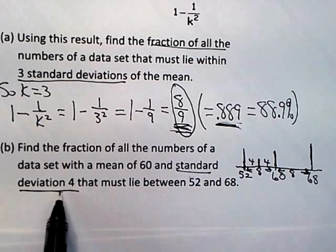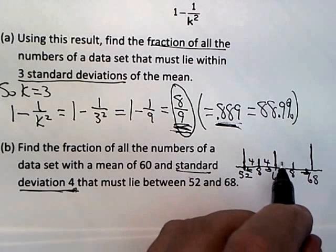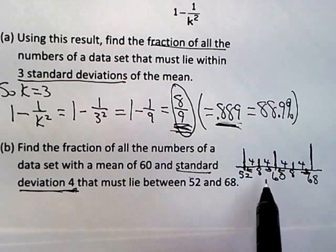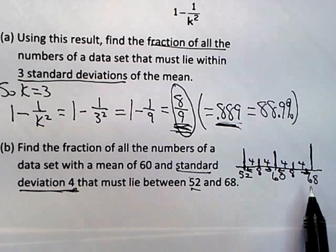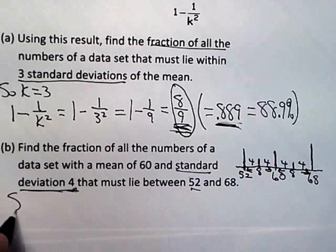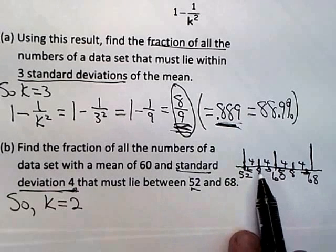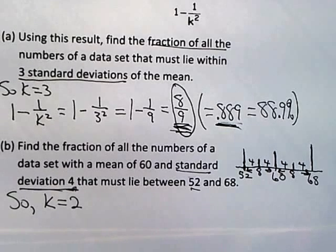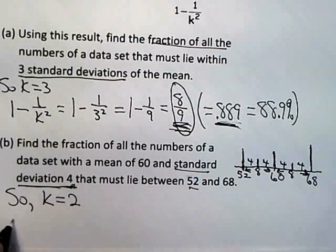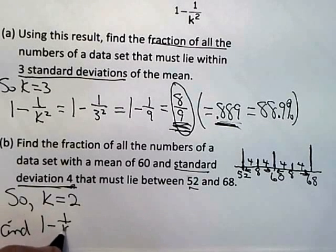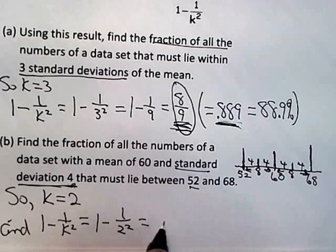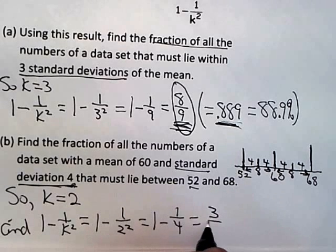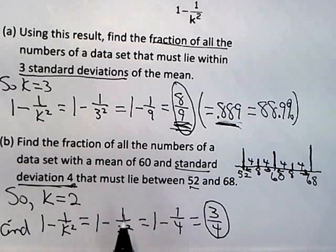If the standard deviation is 4, a distance of 8 represents two standard deviations. So 52 is two standard deviations below the mean of 60, and 68 is two standard deviations above. That means k equals 2. Now applying the formula: 1 minus 1 over k squared = 1 minus 1 over 4 = 3 fourths. So the fraction of data between those two numbers is 3 fourths.